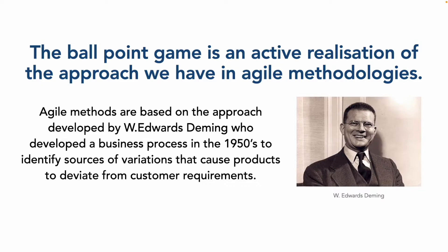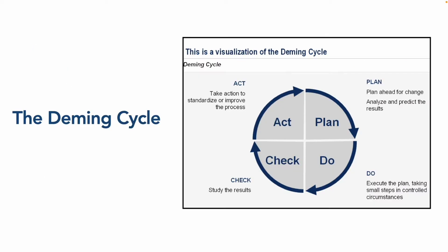Agile methods are essentially based on the approach developed by W. Edwards Deming, who developed a business process in the 1950s to identify sources of variation that caused products to deviate from customer requirements. This actually came from product manufacturing — he created something called the Deming cycle.